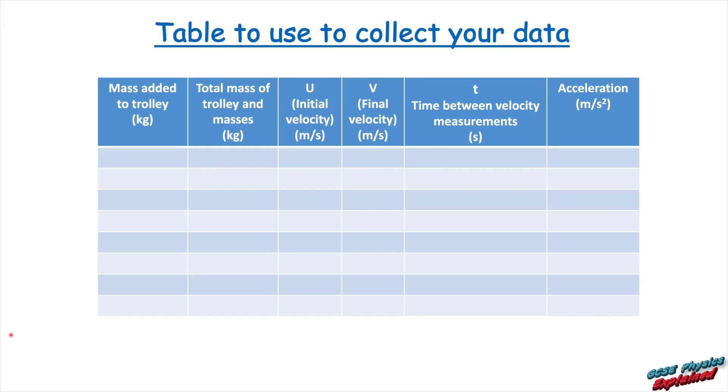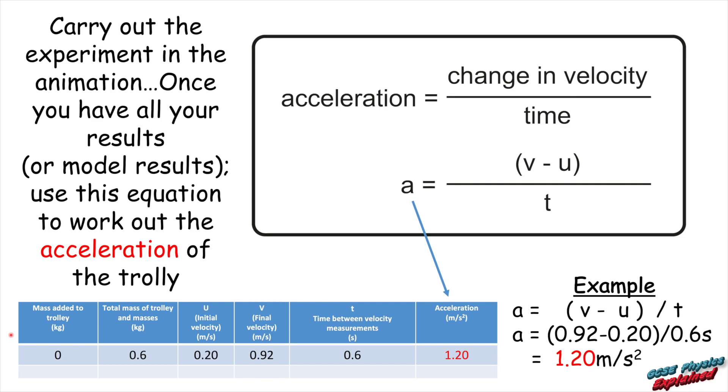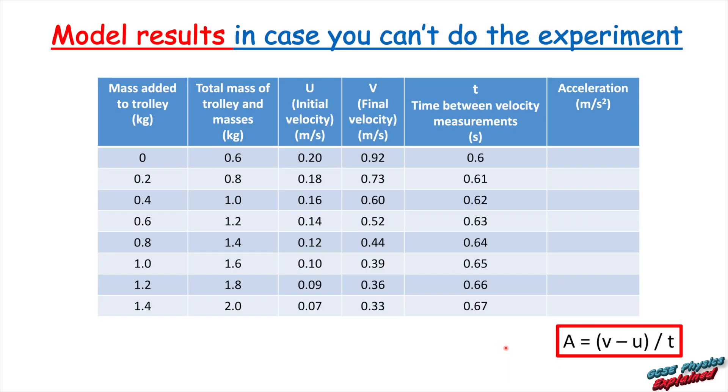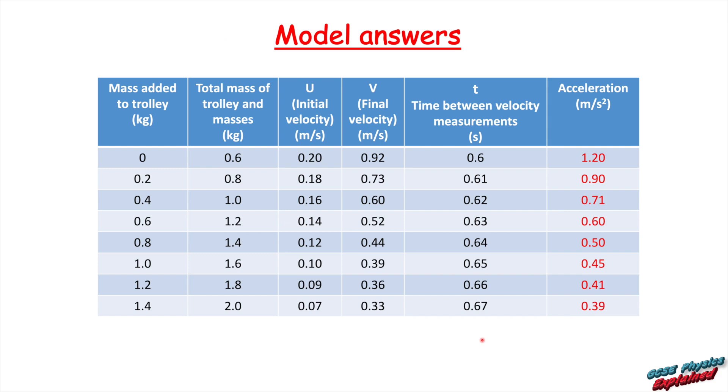So this is a nice table that you can use to collect your data. Once you've got your data, this is how to process it. So we use this acceleration equation here. So we need to take the change in the velocity and divide it by the time. So the change in the velocity is the final velocity V take away the initial velocity U. I'll show you this example down here. So a equals V minus U over T. V is 0.92 in this case. U is 0.2 and time T is 0.6. And if you do that, it should come out as 1.2. So you put your acceleration you've calculated into that final column. Now, just in case you don't have the necessary equipment to do the experiment, there's a set of model results for you. All you need to do is use this equation in order to calculate the accelerations. Pause the video if you're going to do that. And here are the model answers. So check your answers against these answers to make sure you haven't got pork sausages for fingers and you've pressed the right buttons on the calculator.